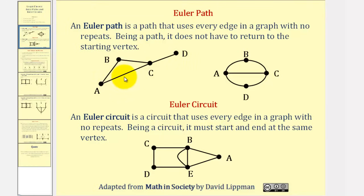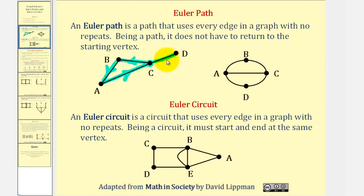Looking at this first graph, there's more than one way to form an Euler path. For example, if we start at vertex C, we could go from C to B, from B to A, from A to C, and C to D. This is an Euler path because we used every edge exactly one time with no repeats.